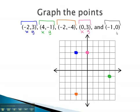The last point is (-1, 0). Negative 1 on the x and 0 on the y. Negative 1 on the x-number line is 1 to the left and 0 up and down.